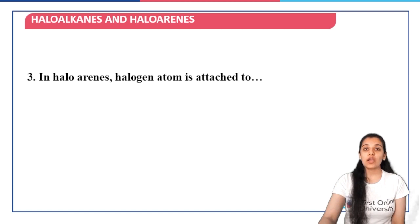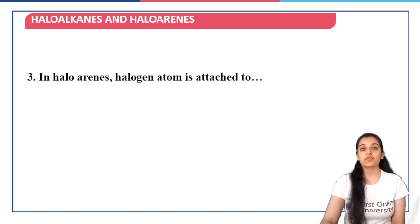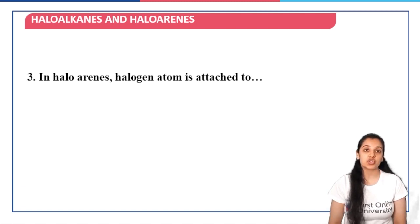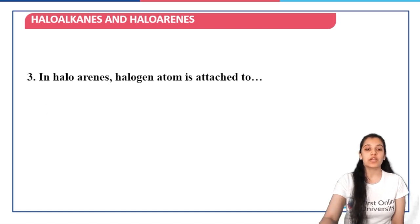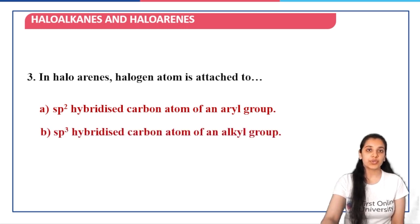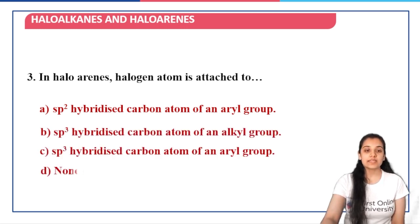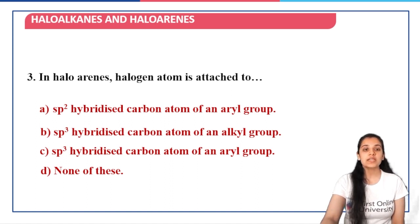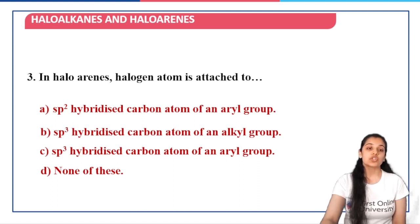The next question is: in haloarenes, the halogen atom is attached to which type of carbon? We have already seen that in haloarenes, the halogen atom is going to be attached to the sp2 hybridized carbon of the aryl group. Wherever you see this option, it is going to be the right answer. So option A is the right answer here.